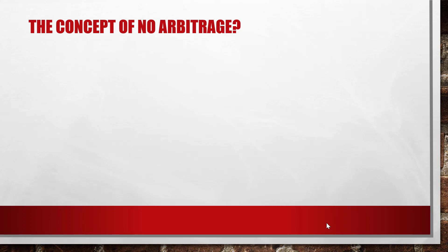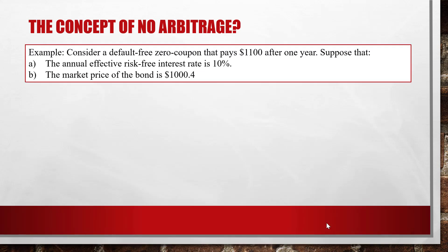Let's get started with the concept of no-arbitrage. Consider a default-free zero coupon bond that pays $1,100 after one year. Suppose that the annual effective risk-free interest rate is 10% and the market price of the bond is $1,000.04. If we use the first information to calculate the price of the bond, we get $1,100 divided by 1.1, which is $1,000 — different from $1,000.04. And if we use the market price to calculate the annual effective risk-free interest rate, we get a different number than 10%.